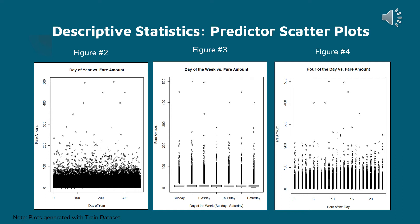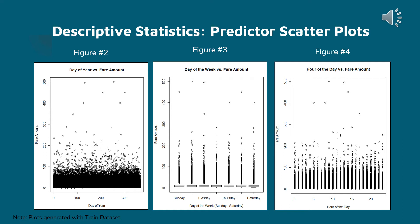Figure 4 compares the hours of the day versus the fare amount. Please keep in mind that our data is based on universal time, which is 4 hours ahead of Eastern Standard Time. Figure 5 compares the distance traveled versus the fare amount, in which we are able to see a correlation or a linear shape to an extent.